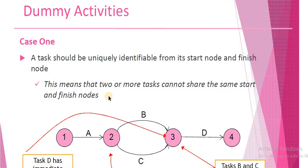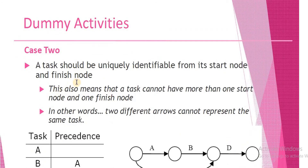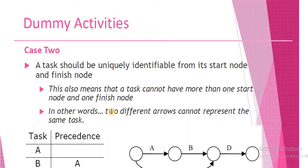In Case 2, the same fact has an additional meaning. It also means that a task cannot have more than one start node and one finish node. In other words, two different arrows cannot represent the same task.